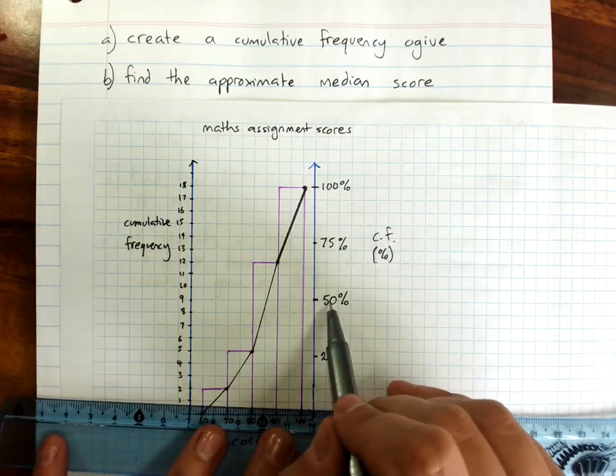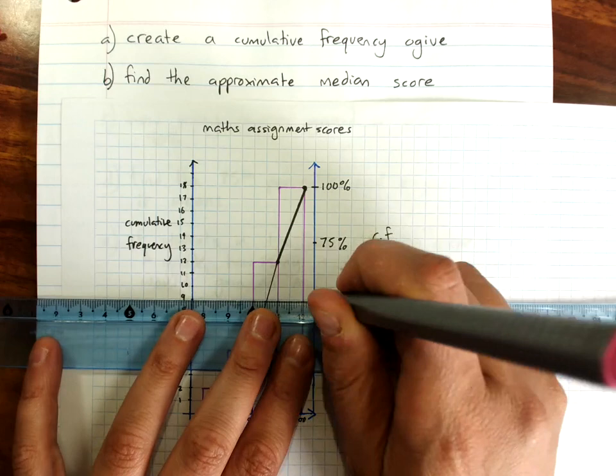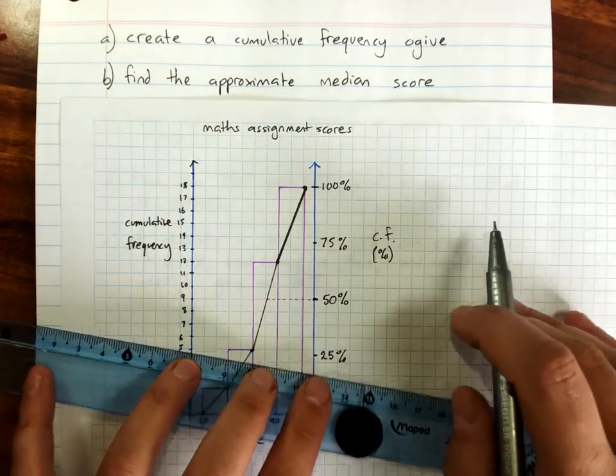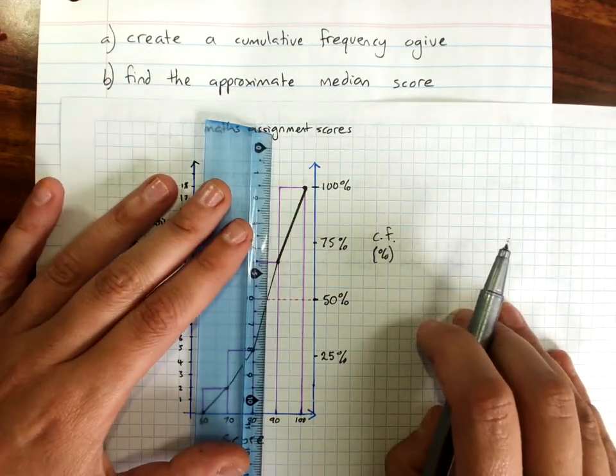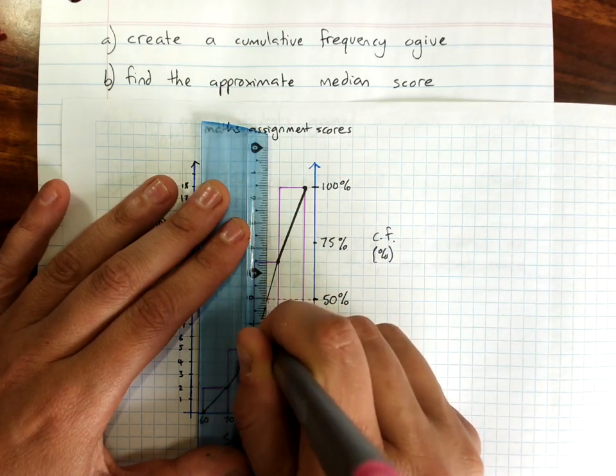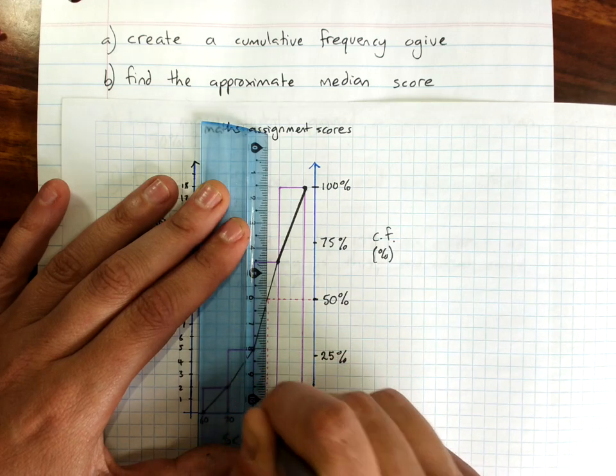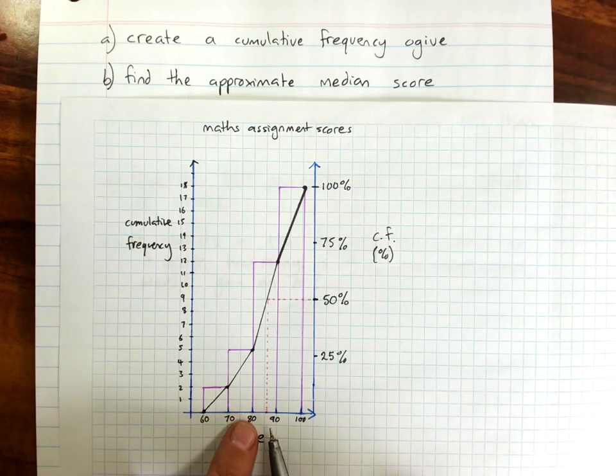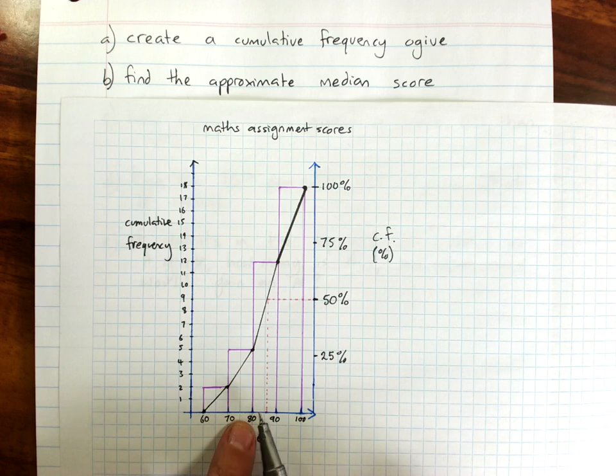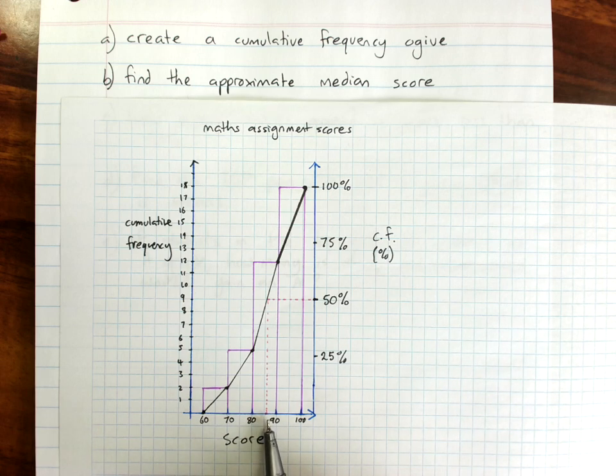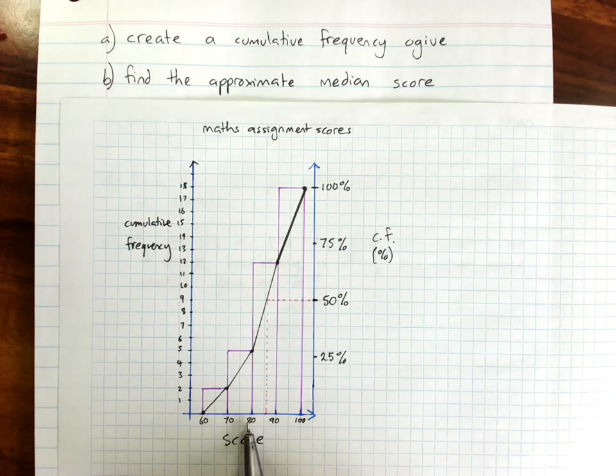To find the median, go to your 50% mark, your 50th percentile. Move horizontally across until you hit the ogive. When you hit the ogive, turn and go straight down as accurately as you can. And from that, you can say that the median is between 80% and 90%. But you can also estimate whereabouts in that range it is. And I would say about 86% because it's just above halfway between 80 and 90.